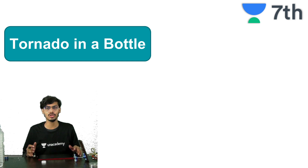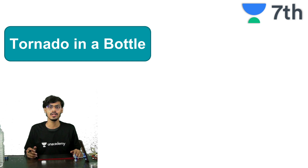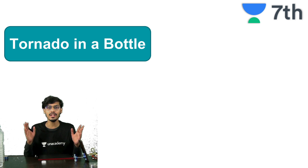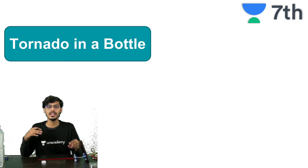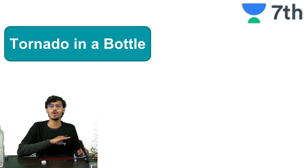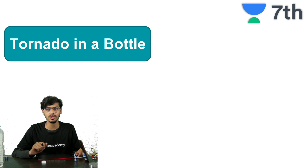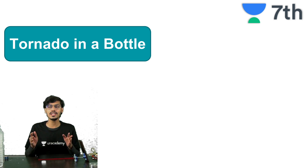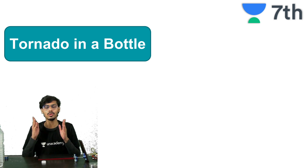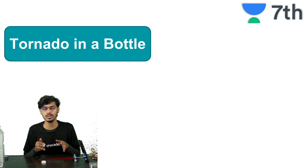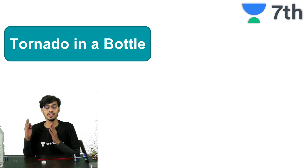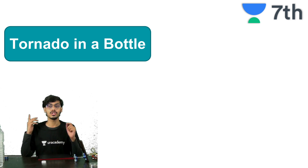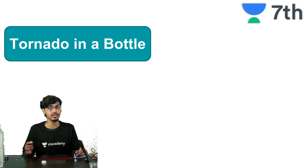What happens in a tornado is the air forms in a funnel shape and it moves around causing destruction everywhere. Till now we have seen that cyclones happen only at coastal areas because they are made in the sea, but tornadoes come on land.